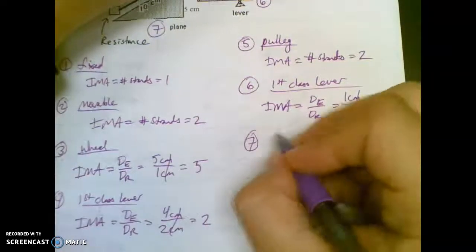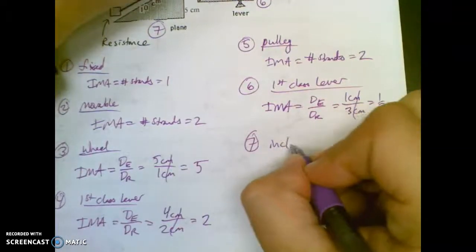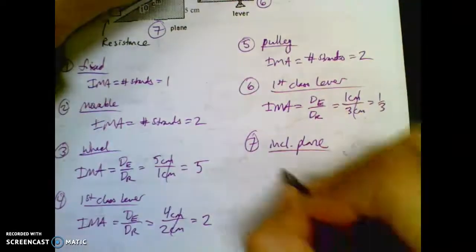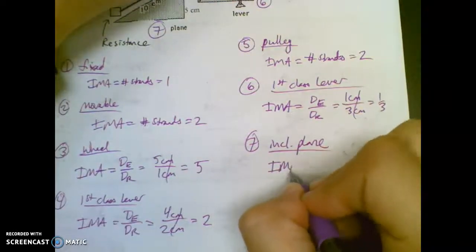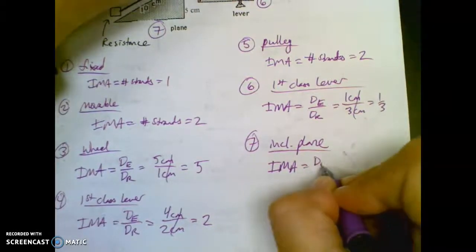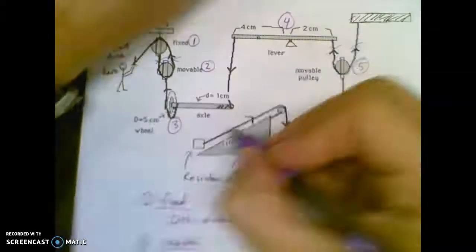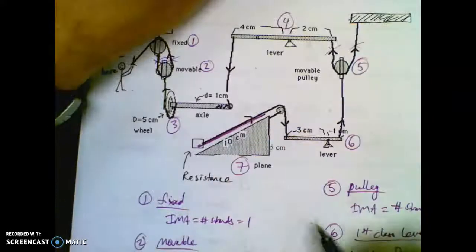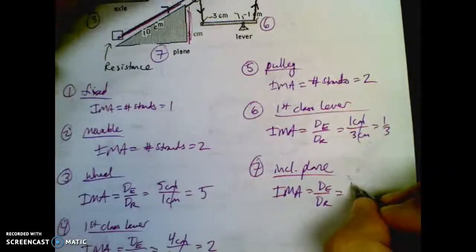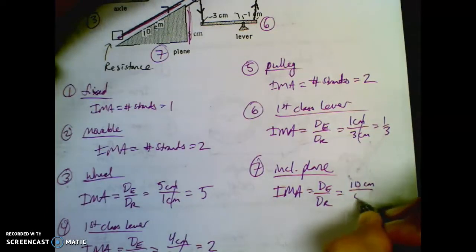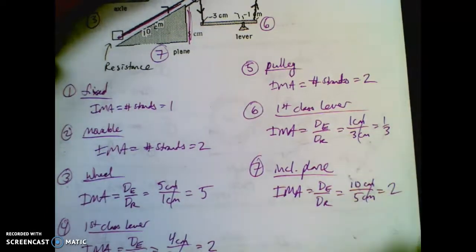And you're on your last shape, an incline plane. It is still DE over DR. And on this one, remember DE is the diagonal, DR is the block moving up. So I'm going to have 10 centimeters over 5 centimeters, which is two.